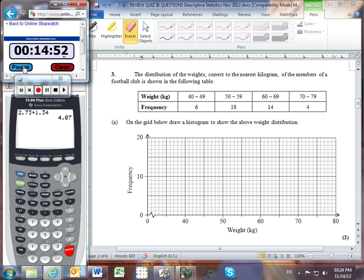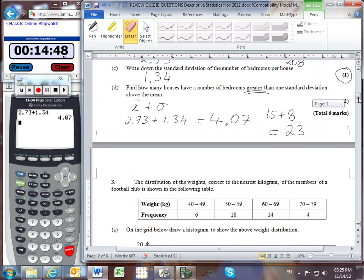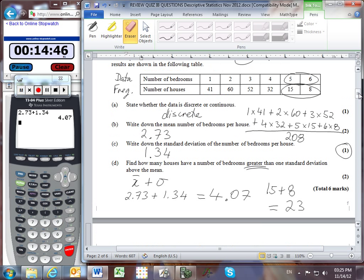Recap from the previous video: one standard deviation above the mean was 4.07 bedrooms. Houses with greater than 4.07 bedrooms must have 5 or 6 bedrooms, totaling 15 plus 8, which is 23 houses that have a number of bedrooms greater than 4.07.